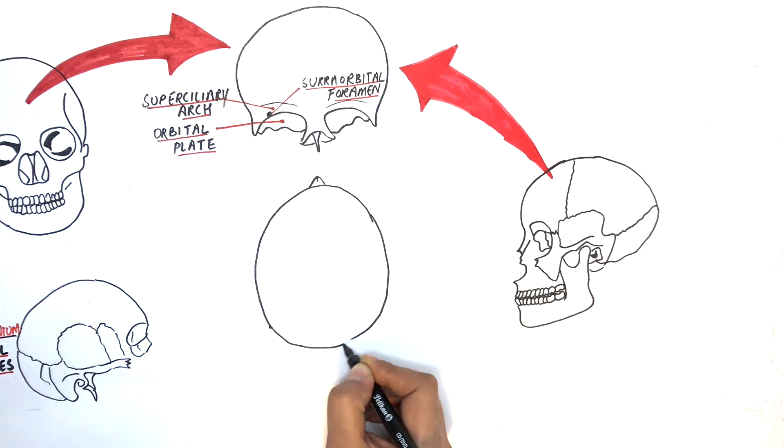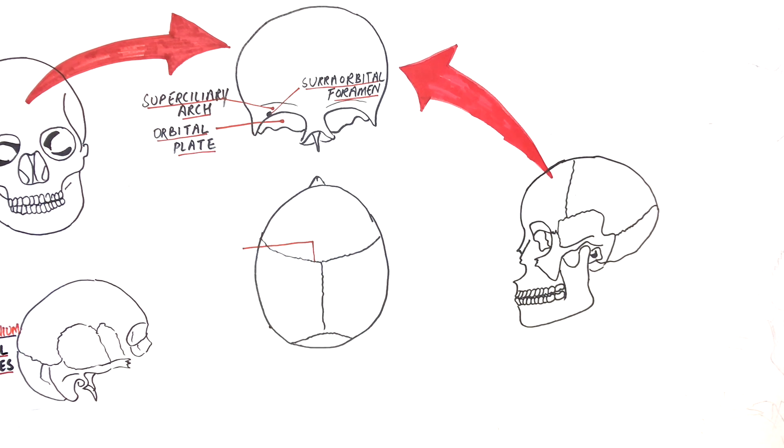From a superior view, the frontal bone is attached with the two parietal bones posteriorly at the coronal or frontal suture.